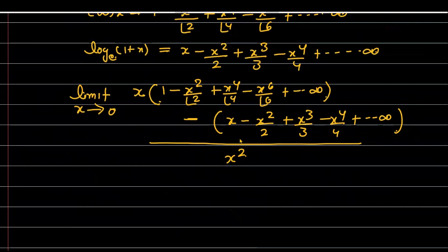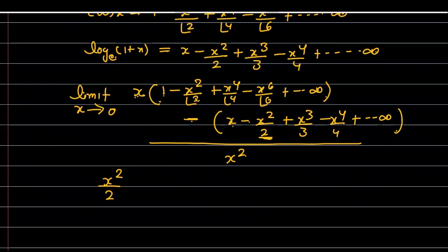Now if we simplify further: first, multiply that leading x into the entire cos(x) expansion. We can manage what cancels. If I multiply x by 1, I get x; and from the log expansion, the first term is minus x — so x and x cancel directly. The first remaining term is x²/2, and when the minus sign is multiplied through it becomes plus x²/2. After that, a cube term arises: minus x³/2! (from cos) and minus x³/3 (from log).